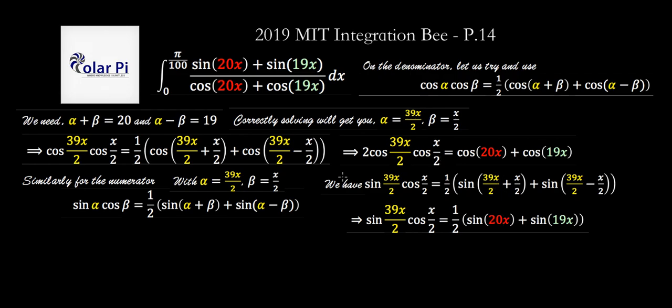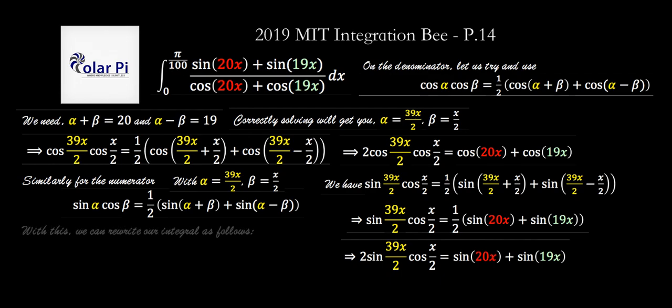And so, first combining these guys into the 20x that they should be, and then the other guy to the 19x that it should be, and then multiplying both sides of this equation by 2, we get this. So now this here is equal to this, so we've got our replacement for the numerator of our integrand.